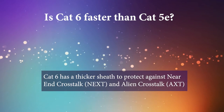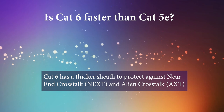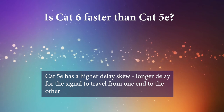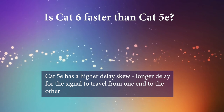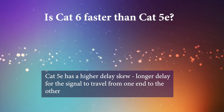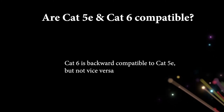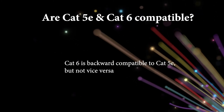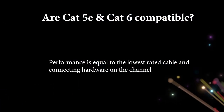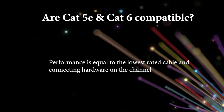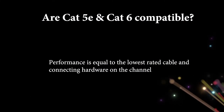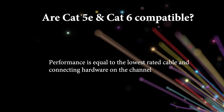Cat 6 has a thicker sheath or outer jacket to protect against not only abrasion but also near-end crosstalk and alien crosstalk. Despite the fact that both Cat 5E and Cat 6 cables can support gigabit networks, Cat 5E cables have a higher delay skew, meaning a longer delay for the signal to travel from one end to the other. Category 6 is backward compatible to Category 5E, but not the other way around. The channel performance is equal to the lowest rated components on the channel; for example, Cat 6 horizontal cable terminated to Cat 5E rated keystone jacks and patch panels will only perform at Category 5E speed.